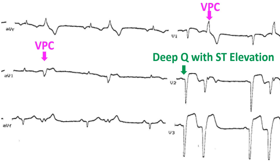This person with anterolateral myocardial infarction developed AIVR, VPCs, as well as ventricular fibrillation requiring a couple of DC shocks. AIVR is an important reperfusion arrhythmia which usually needs only observation and no active treatment.